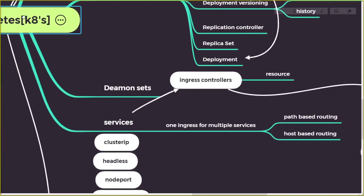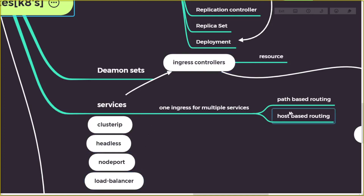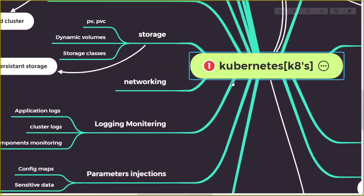We'll discuss what each service does and what we'll be covering. Because writing a separate LoadBalancer service for every application becomes very costly, we'll move to ingress controllers. An ingress controller allows one load balancer to expose all your applications using path-based routing and host-based routing, so one load balancer is enough for multiple services.